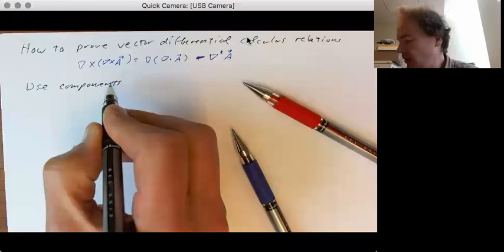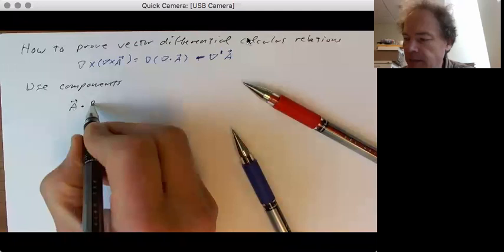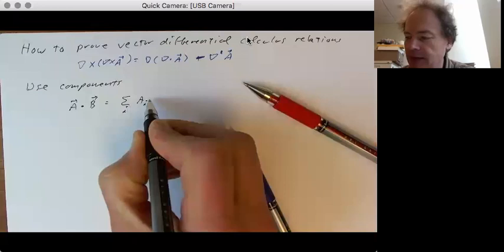And so if I want to write a dot product, a dot b, well that's the sum over i of a times i, b times i, and that seems nice and easy and straightforward, and it is.